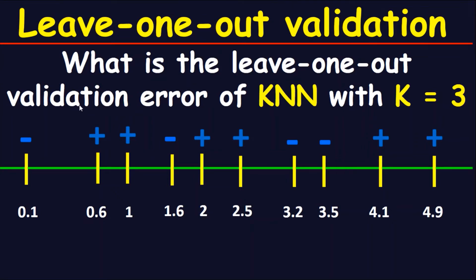We should get the leave-one-out validation error of K-Nearest Neighbor when k is equal to 3 on this dataset. What you have to do is simply look at the first point, which is 0.1, then look at the closest three points to this point in this dataset. The closest three points to this point are 0.6, 1, and 1.6.